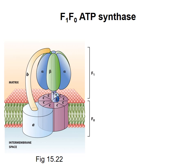ATP synthase is an enzyme that allows protons to move from the intermembrane space into the matrix, down their electrochemical gradient. A representation of the essential subunits of the enzyme is shown here. You can see that it is composed of many protein subunits, some of which are transmembrane proteins making the FO sector, and some of which are peripheral membrane proteins making the F1 sector.